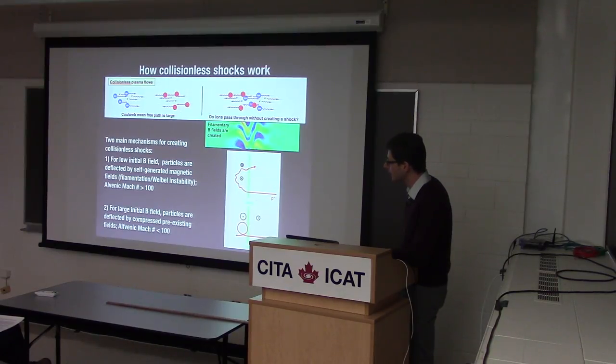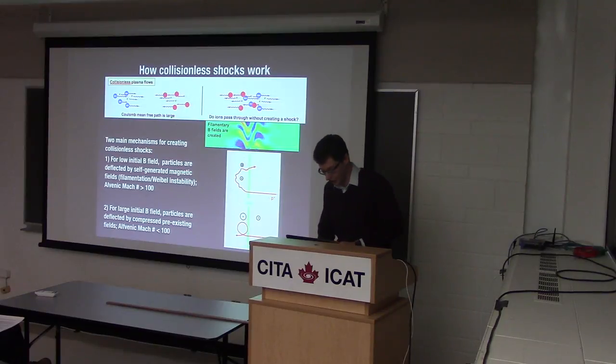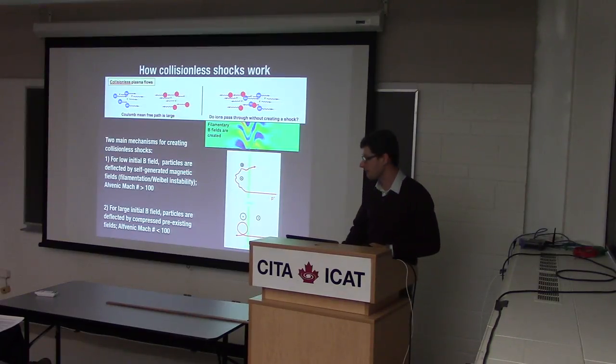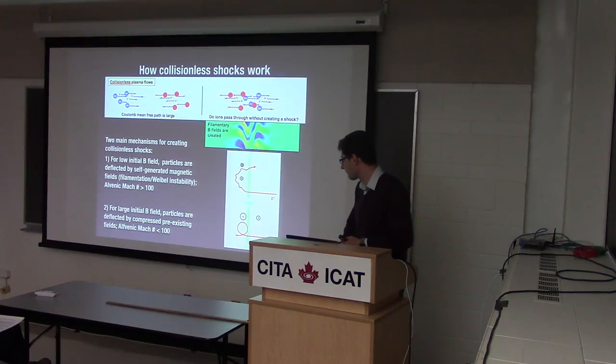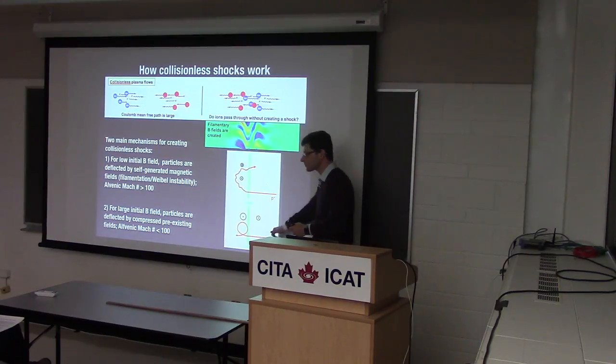The typical transition is around Alfvénic Mach number of about 100: greater than 100 gives you Weibull-type filamentation, less than 100 gives a magnetized shock.